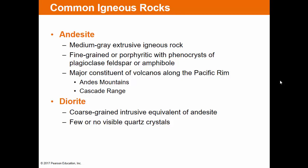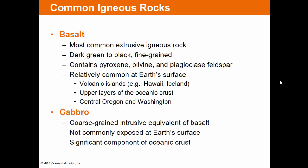Andesite has intermediate silica content and relatively explosive volcanoes, like Mount St. Helens, found along the Pacific Rim. Diorite is the coarse-grained equivalent of andesite, formed slowly deeper in the earth. Basalt forms at the surface and is the most common extrusive igneous rock — very low silica, comes from the upper mantle, common in volcanic islands and upper layers of oceanic crust. Large basalt flows are found in central Oregon and Washington — the Columbia River Plateau. Gabbro is the coarse-grained equivalent of basalt, cooled underneath the seafloor, a major component of oceanic crust.